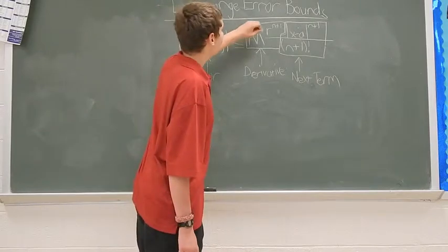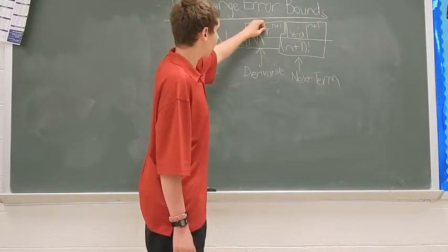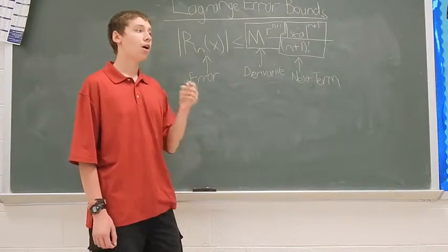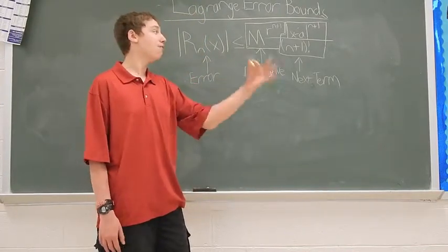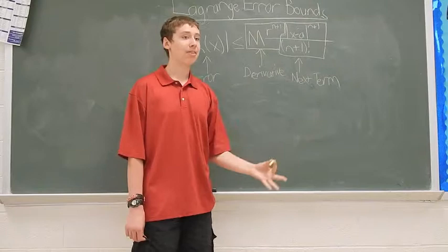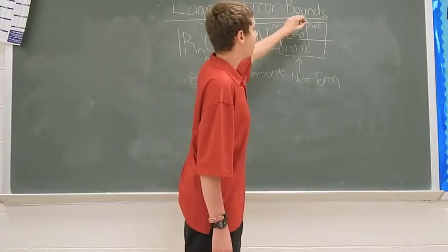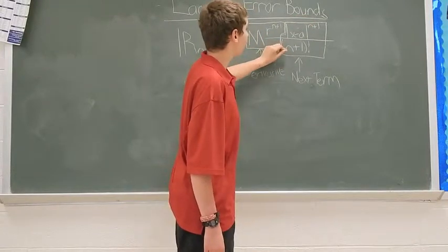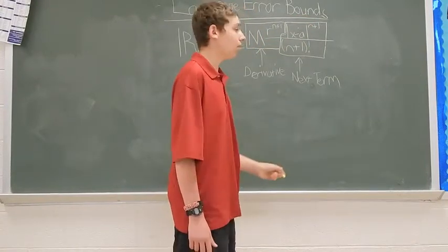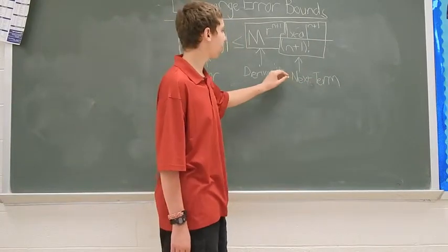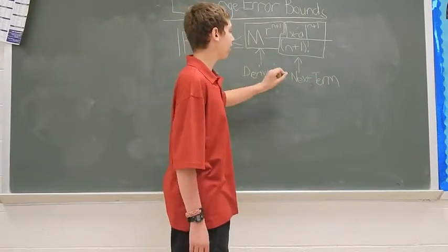Now, m times r sub n plus 1, that's just simply the derivative of the term after what you're looking for. I'll explain that more in-depth later with our example. Then, we have x minus a to the n plus 1 over n plus 1 factorial, which is just the Taylor series of your next term.